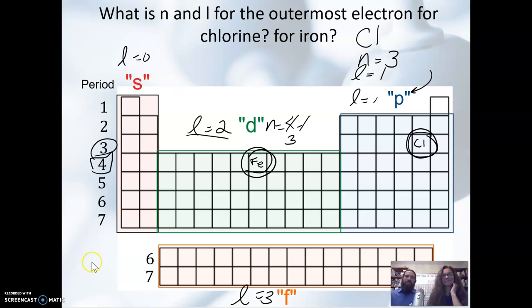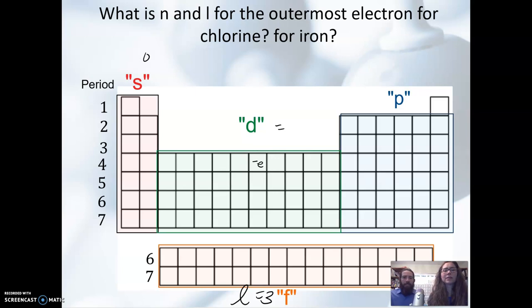Now notice when we said that L could be 0 up until n minus 1, so we have this example with our chlorine. We had n equals 3, so L could have been 0, 1, or 2 when n equals 3. In this case, we were in the P block, and n is equal to 3, period 3, and L, because it's in the P block, is equal to 1.